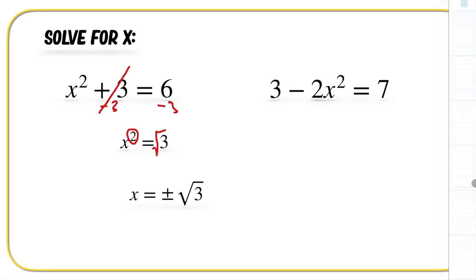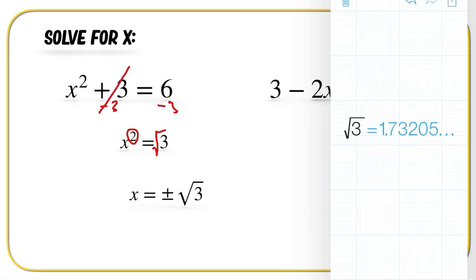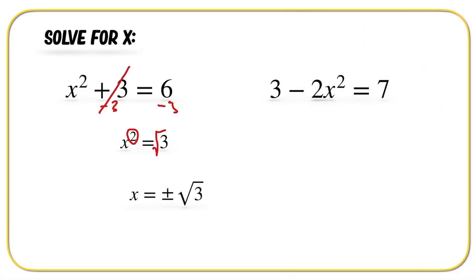Now we could go ahead and solve that as well. The square root of three is equal to 1.73205 and so on, so we would get positive and negative 1.73205. Or it's better to keep it exact and say x is equal to plus or minus the square root of three.